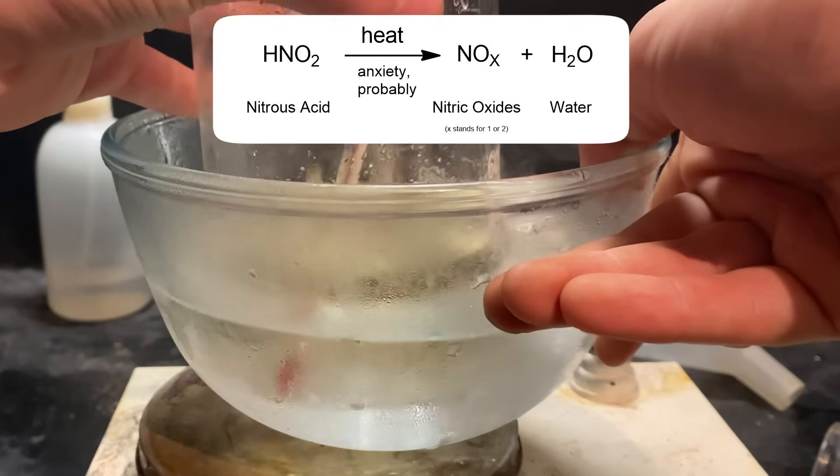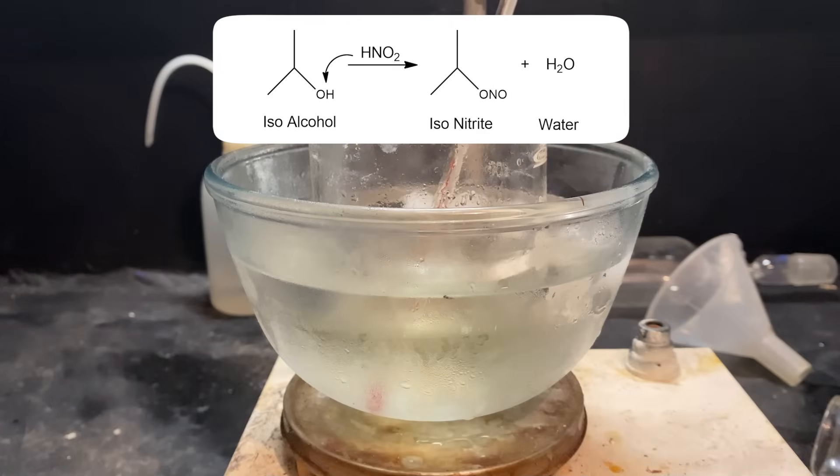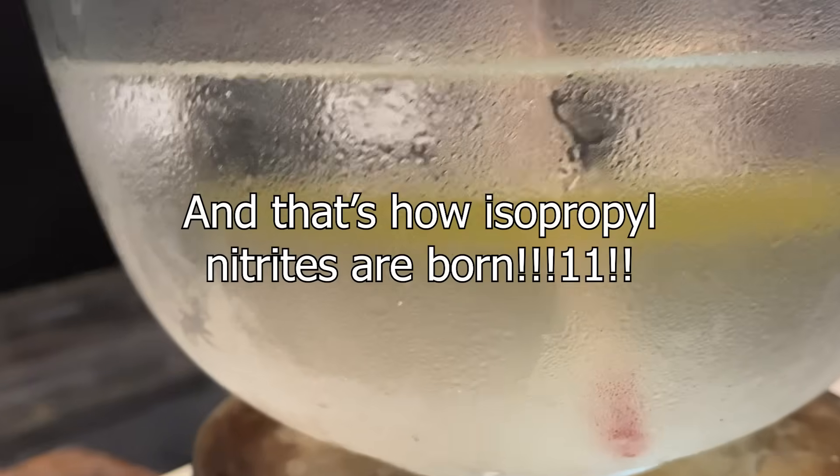which is why this reaction has to be done at ice-cold temperatures. Once it is formed, it immediately reacts with the isopropyl alcohol, or more specifically this OH group, to replace it with a nitrite group. The resulting molecule is insoluble in water, so it travels to the top. And that's how isopropyl nitrite is born!